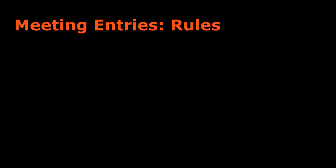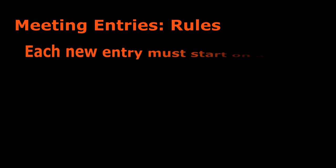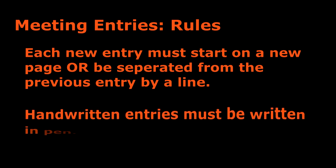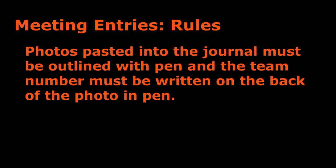There are several rules that you need to follow when making your entries. When you start a new entry, it should either start on a new page, or be separated from the previous entry by a line, so that the judges can see where each entry begins and ends. If you write your entries out by hand, you have to write them in pen. And if you glue pictures into your journal, then you need to outline them against the paper with a pen, and also write your team number on the back of the picture.